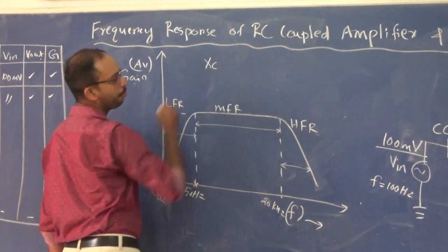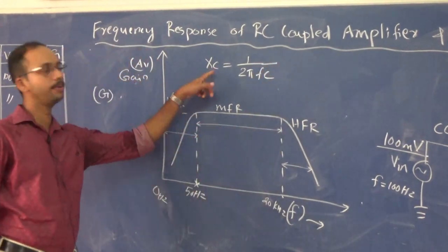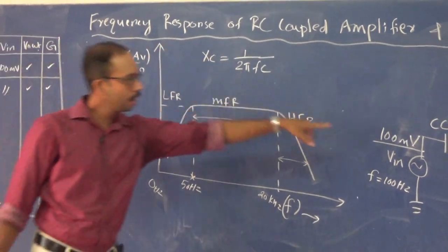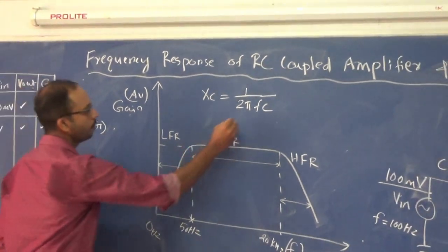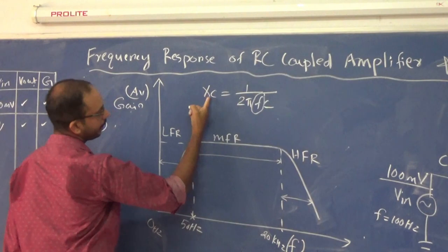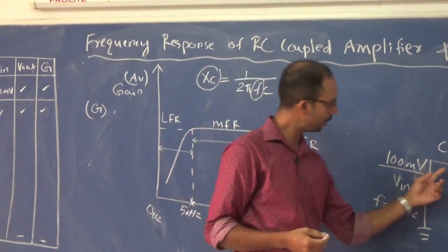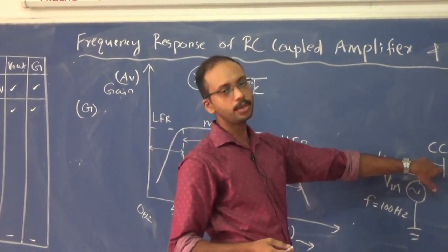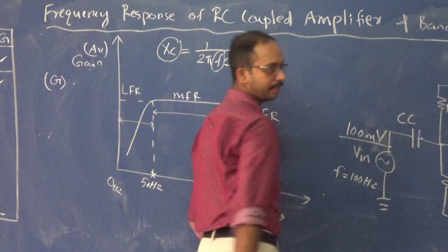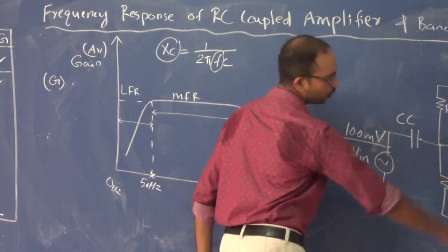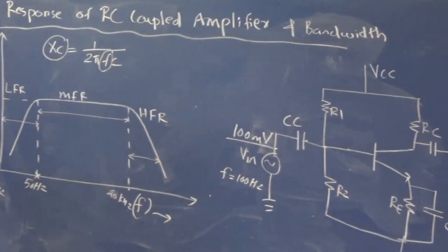The capacitive reactance is equal to 1/(2πfC). In the low frequency region, when frequency is small the reactance is high. When the reactance of the coupling capacitor is high, only a very small part of the signal reaches the base or the NPN amplifier configuration for amplification. For that reason, gain decreases in the low frequency range.